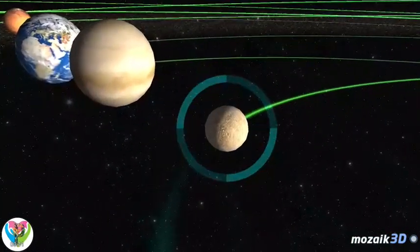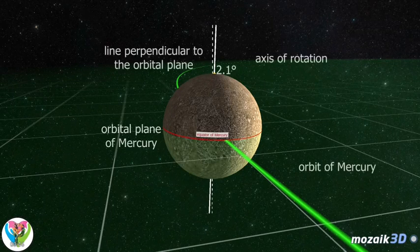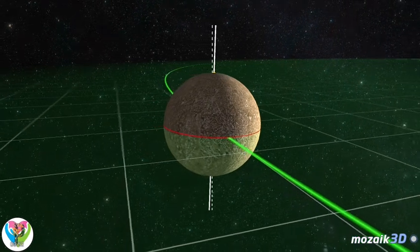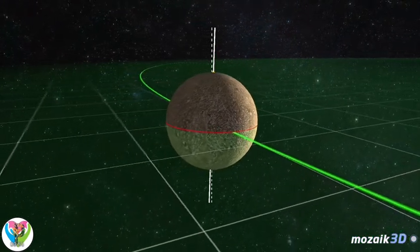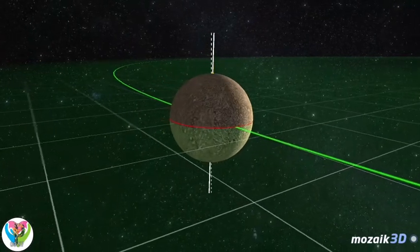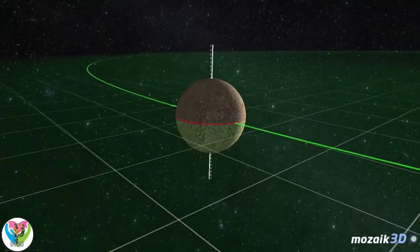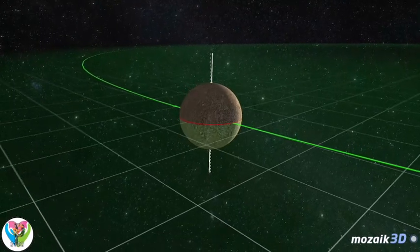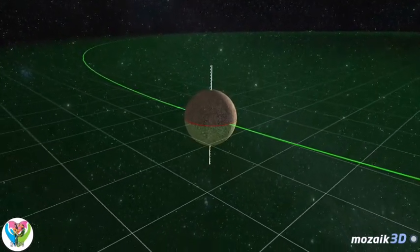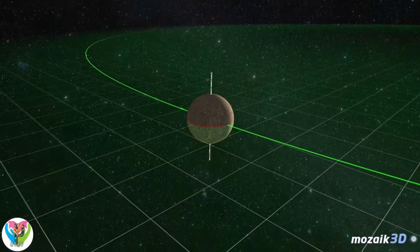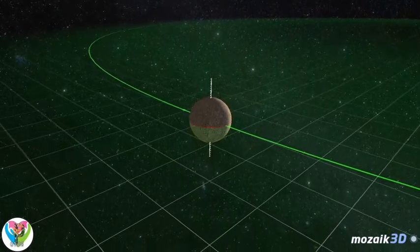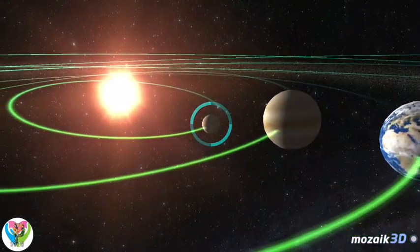Mercury, the protector of travelers and guide of dead souls, has comparatively little information available. Two space probes have visited: Mariner 10, which mapped only 45 percent of its surface, and MESSENGER, launched in 2004. MESSENGER flew by Mercury several times, taking pictures of nearly the entire surface, and in 2011 was placed in orbit around the planet.